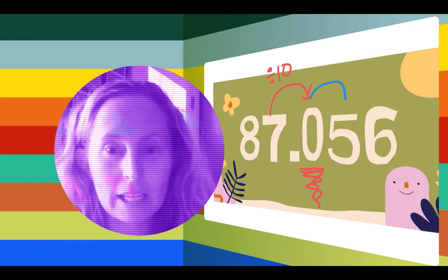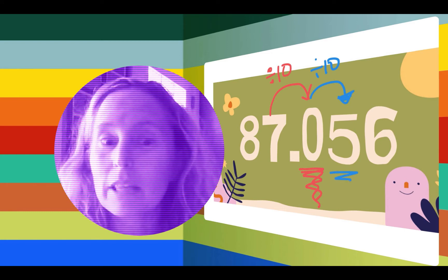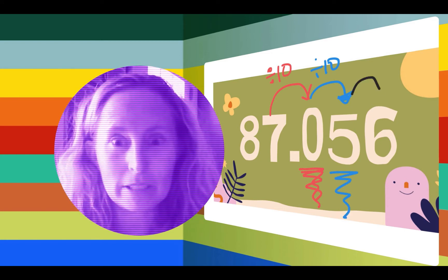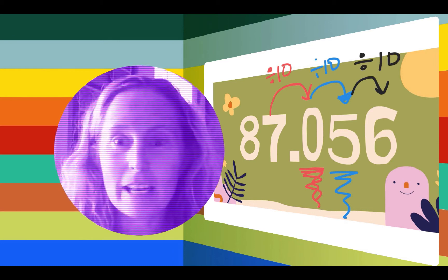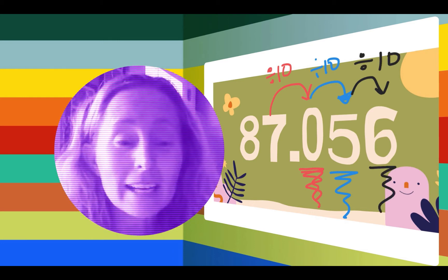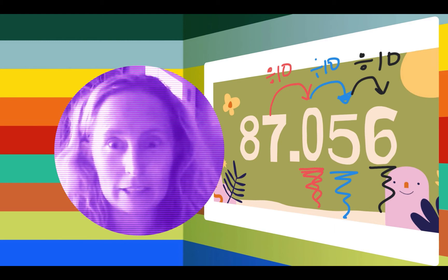If you took that dime and you broke it into ten equal pieces, you would have a hundredth or a penny. And then if you took a penny and you broke it into ten equal pieces, which we have no coin that small, you would have a thousandth.